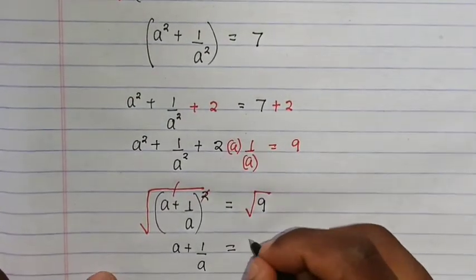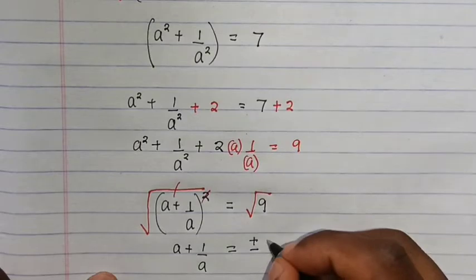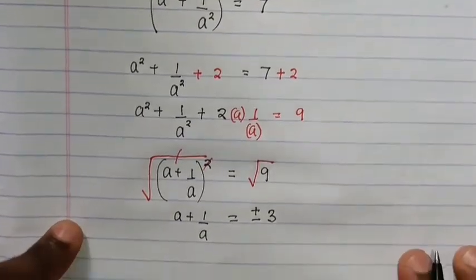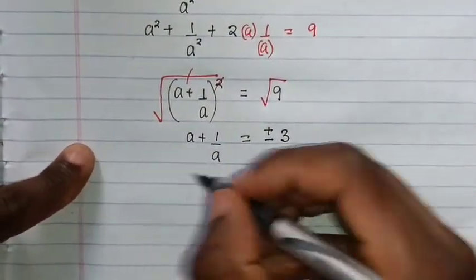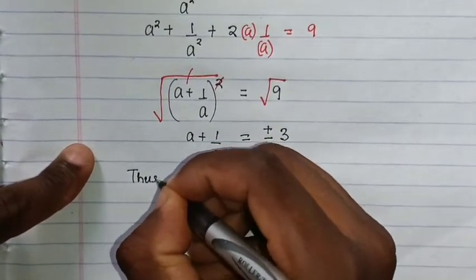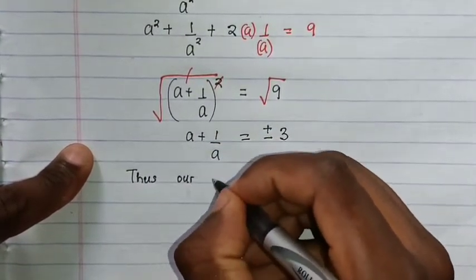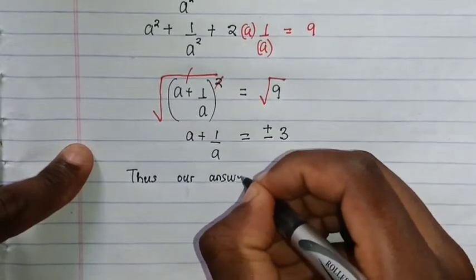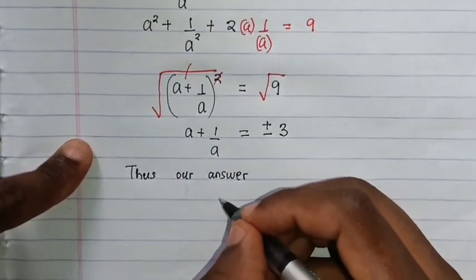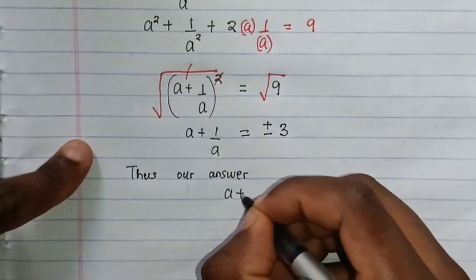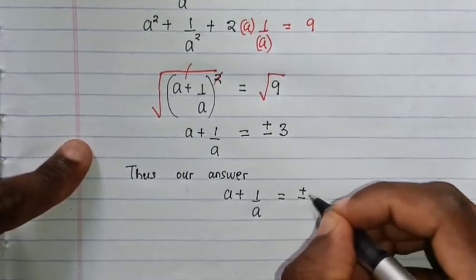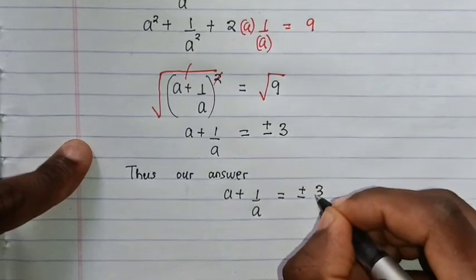Plus or minus 3. So that's our answer. This equals to a plus one over a is equals to plus or minus 3.